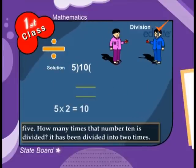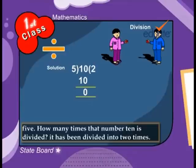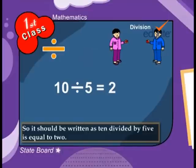How many times that number 10 is divided? It has been divided into 2 times. So, it should be written as 10 divided by 5 is equal to 2.